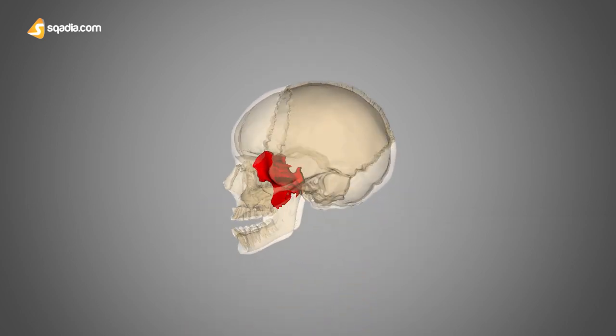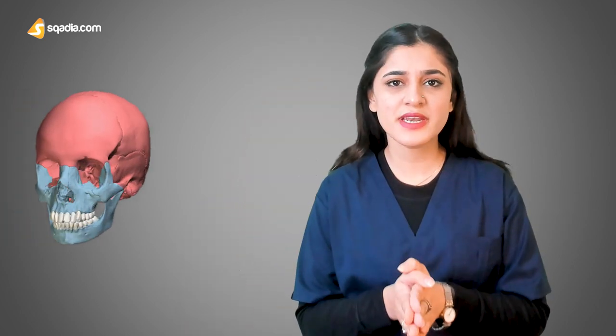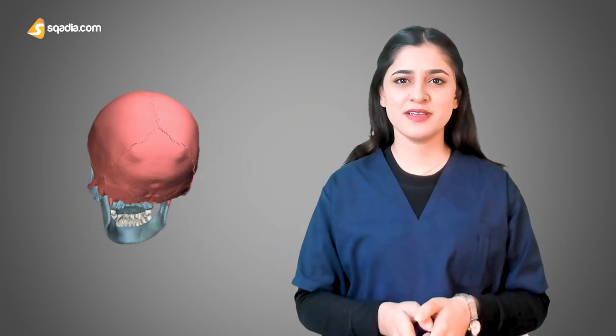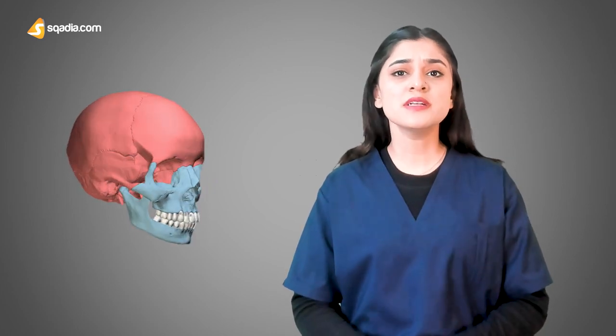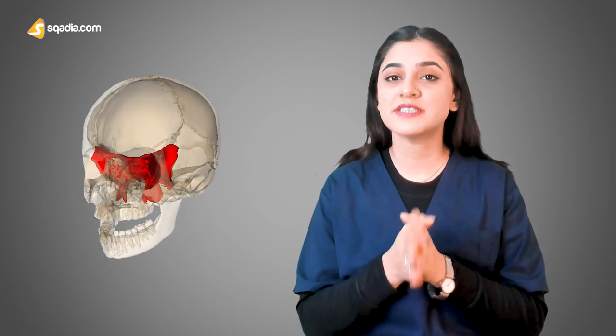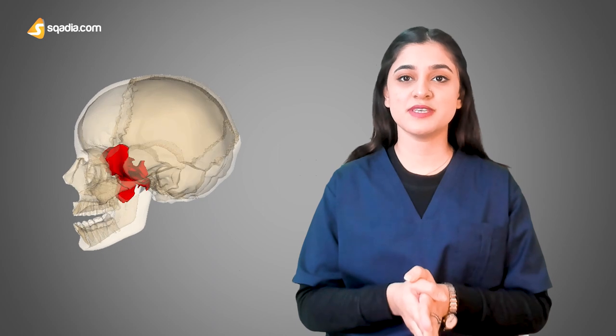Sphenoid is one of these eight cranial bones. The cranium is basically the superior aspect of the skull, and its function is to protect the brain. Do you guys see how this bone resembles a bat with outstretched wings?